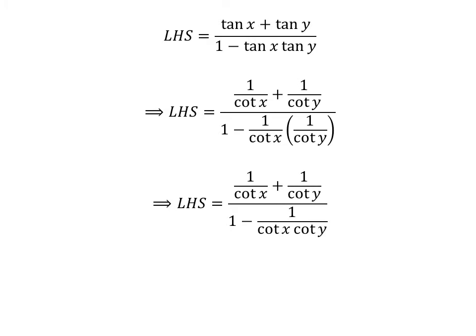The multiplication of 1 upon cotangent of x times 1 upon cotangent of y equals 1 upon cotangent of x times cotangent of y. So, the left-hand side becomes 1 upon cotangent of x plus 1 upon cotangent of y, upon 1 minus 1 upon cotangent of x times cotangent of y.